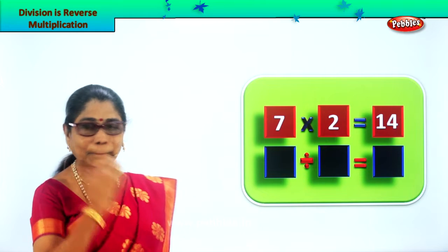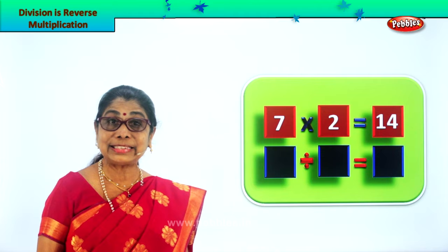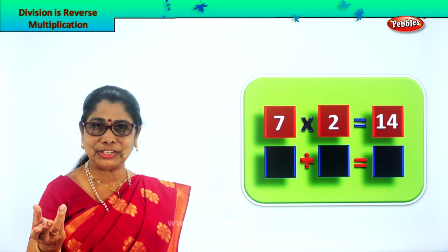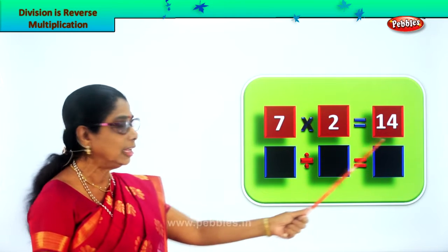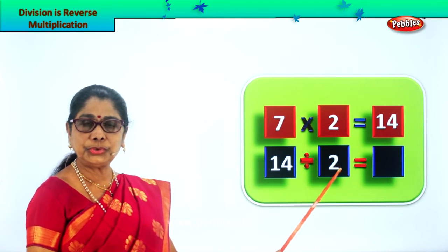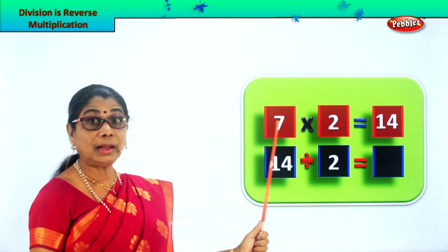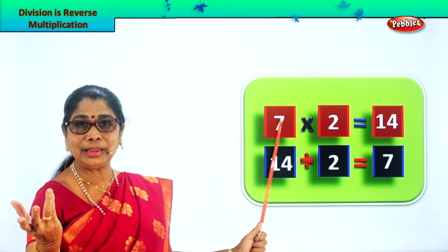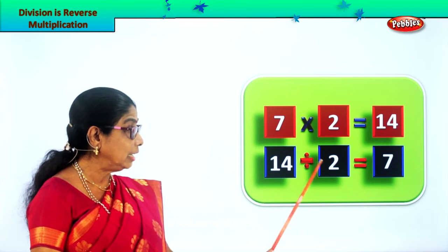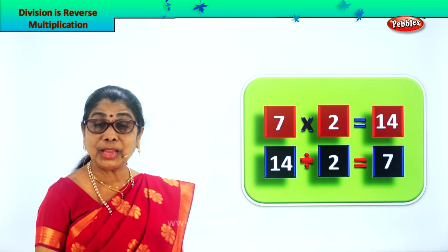Here we are. Seven into two — seven twos are equal to 14. Seven multiplied by two gives you 14. Now, division is reverse multiplication. So let's divide 14 now. You divide 14 by two. Two goes into 14 how many times? Two will go into 14 seven times. Seven twos are 14. So that is it — division is reverse multiplication. 14 divided by two gives you seven. Seven into two gives you the answer 14.